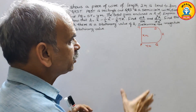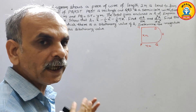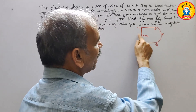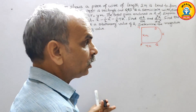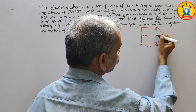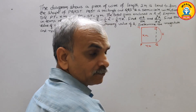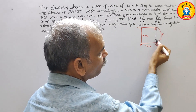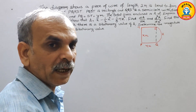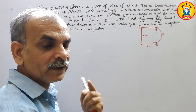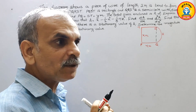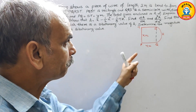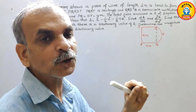Looking at the diagram: PQST is a rectangle. If you draw a line across, it forms a rectangle. The semicircle has a diameter SQ. Whatever shape has been made, the total length of wire used is 2 meters — that means the perimeter of this shape is 2 meters.